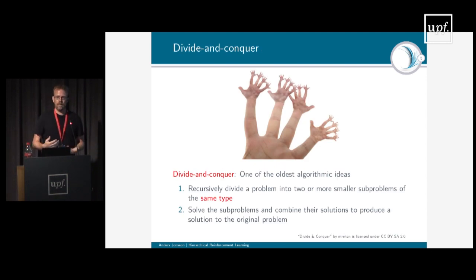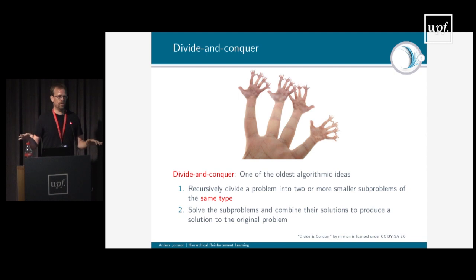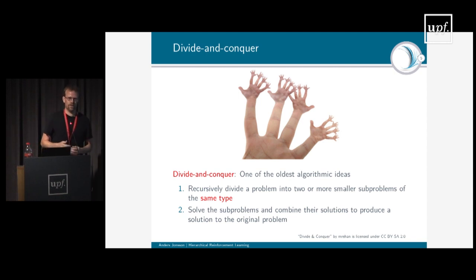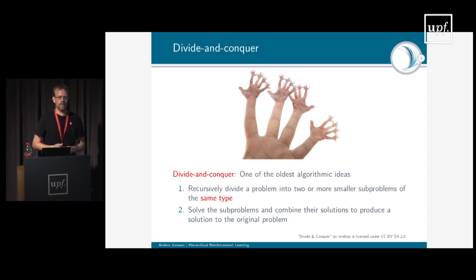Hierarchical reinforcement learning can really be viewed as an instance of divide and conquer, which is one of the oldest algorithmic ideas. Most of you know about things like the merge sort algorithm — we're given a collection of items to sort, and the strategy is to divide the collection into two parts, recursively sort those parts, and then merge the two sorted collections into a single sorted collection. Divide and conquer works this way: you recursively divide your problem into two or more smaller sub-problems of the same type, solve those sub-problems, and then combine their solutions to give a solution to the original problem. In certain situations we can view hierarchical reinforcement learning as an instance of divide and conquer.